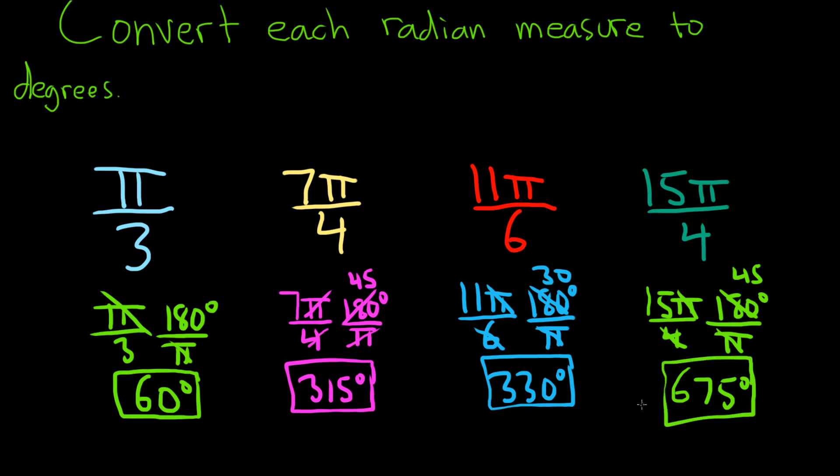So whenever you have a radian measure and you want to convert it to degrees, just multiply by 180 over pi. That's it.